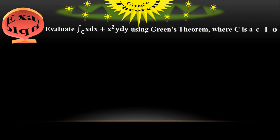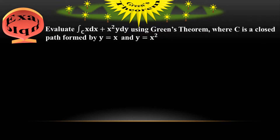Let me do a simple tutorial on Green's theorem. Example: evaluate the line integral of x dx plus x squared times y dy using Green's theorem, where C is a closed path formed by y equals x and y equals x squared from the origin to point (1,1).